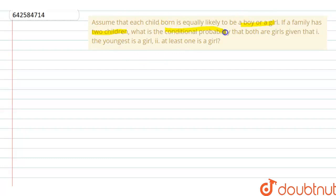what is the conditional probability that both are girls given that the youngest is a girl, or at least one is a girl?